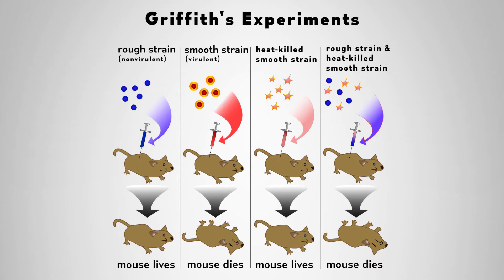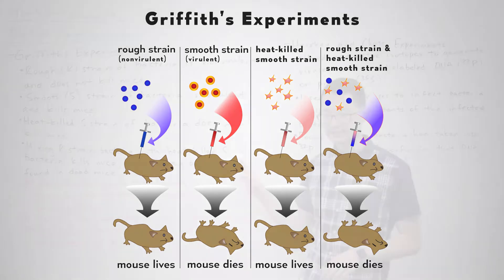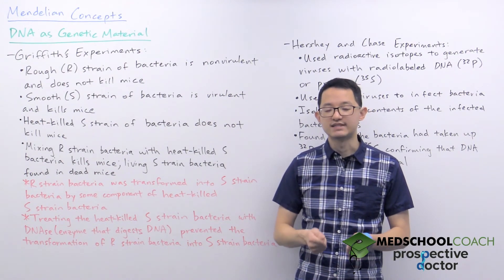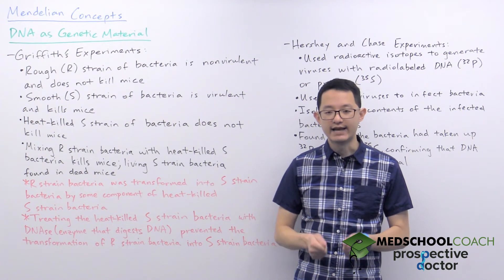In the next experiment Griffiths took the S strain of bacteria and killed them using heat. When these bacteria are killed by heat the cells are dead — they're not living. When he took these heat-killed S bacteria and injected them into mice, the mice did not die, which makes sense because the S strain of bacteria are not living. In the last experiment he took these heat-killed S strain bacteria, combined them with living R strain bacteria, and injected this mixture into mice. What he found was that the mice died, and furthermore when he inspected the bodies of these dead mice he found living S strain bacteria.